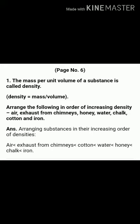First question: arrange the following in order of increasing density — air, exhaust from chimneys, honey, water, chalk, cotton, and iron. As we know, density equals mass per volume. Therefore, air will have very less density, and then exhaust from chimneys. Exhaust from chimneys will have a little more density. Then cotton, then water, then honey, chalk, and finally iron, which will have the highest mass per volume.